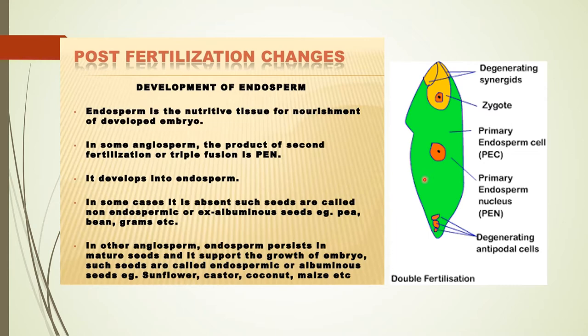These endosperm cells are filled with reserve food material used for the nutrition of the developing embryo. When the primary endosperm cell starts dividing, it undergoes successive free nuclear division, giving a number of free nuclei inside the embryo sac — at this stage we call it free nuclear endosperm. The primary endosperm cells start dividing without cell wall formation, with free nuclei present. After that, wall formation takes place from the periphery to the center, and this endosperm becomes cellular — known as cellular endosperm.